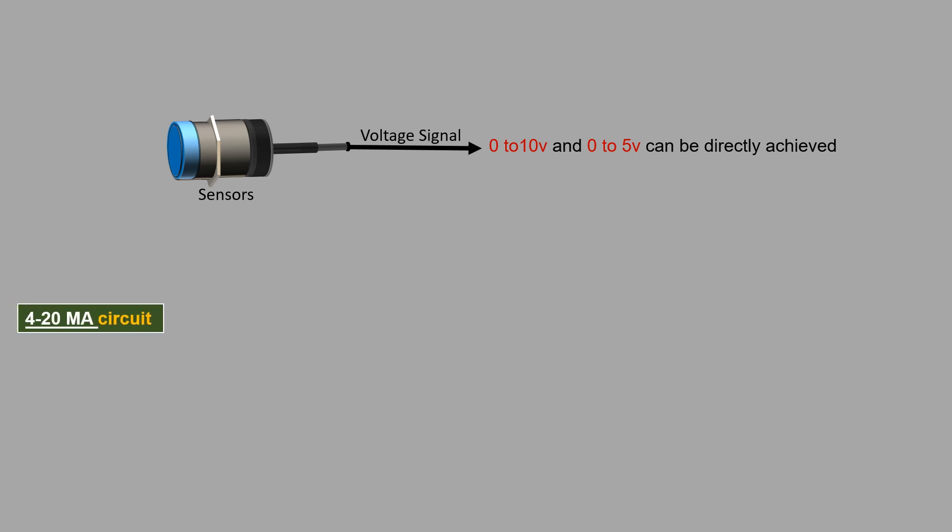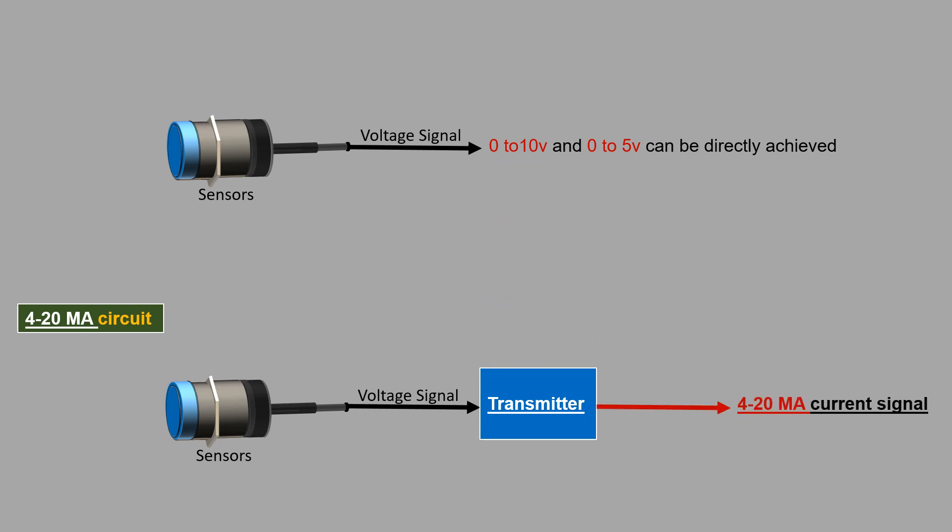Since most sensors naturally generate output in the form of voltage, 0 to 10 volt and 0 to 5 volt outputs can be directly achieved. In 4 to 20 mA circuits, the voltage output of the sensor is sent to a transmitter which will convert the voltage signal into a current signal.